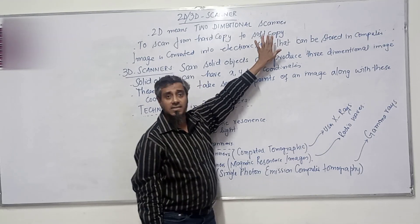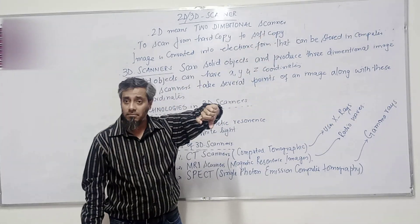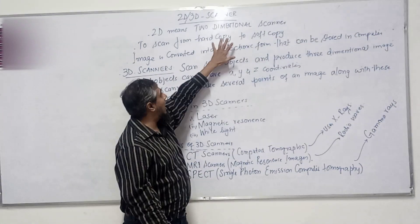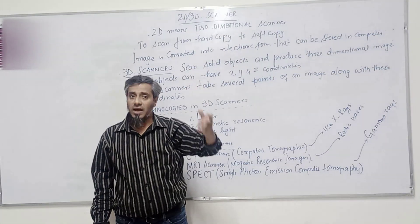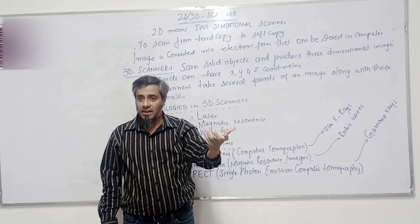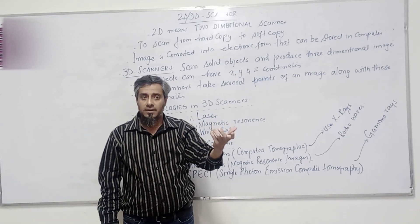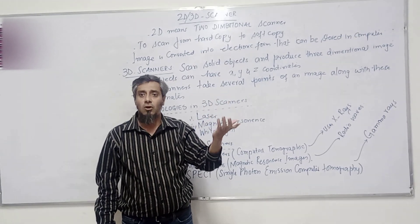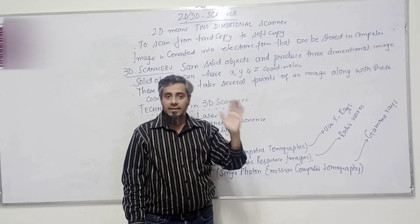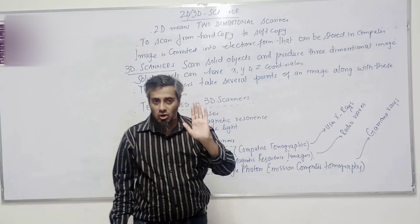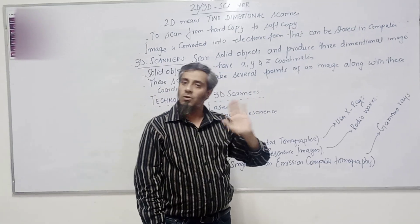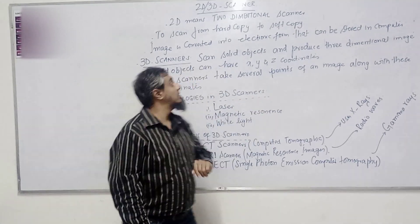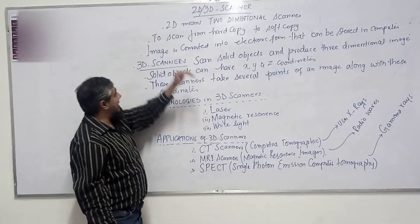Soft copy is the digital form and hard copy is the form you have in physical form. That can be a document — it can be an image document, it can be a text document, whatever you have.